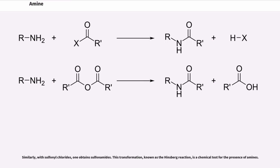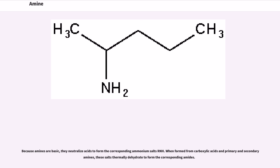Similarly, with sulfonyl chlorides, one obtains sulfonamides. This transformation, known as the Hinsberg reaction, is a chemical test for the presence of amines. Because amines are basic, they neutralize acids to form the corresponding ammonium salts RNH3+. When formed from carboxylic acids and primary and secondary amines, these salts thermally dehydrate to form the corresponding amides.